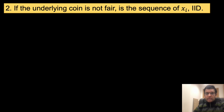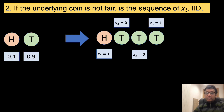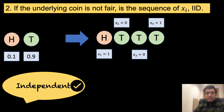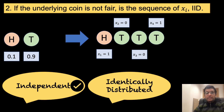Now let us move on to the next question. If the underlying coin is not fair, is the sequence of x sub i IID? Clearly, the only implication of the fact that the coin is not fair is that the probability distribution is different. The coin tosses are still independent, and due to the same probability distribution across tosses, they are identically distributed.